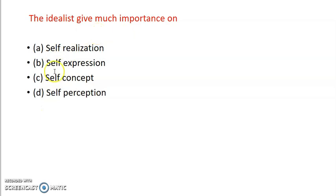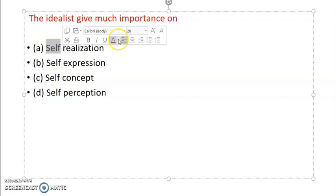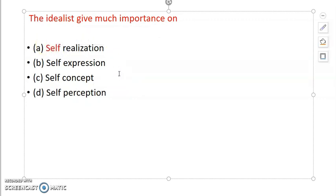The idealistic give much importance on self-realization, self-expression, self-concept, self-perception. So answer is A, that is self-realization. As I just explained, idealist thought believes that self-realization should happen, a person should be self-disciplined.